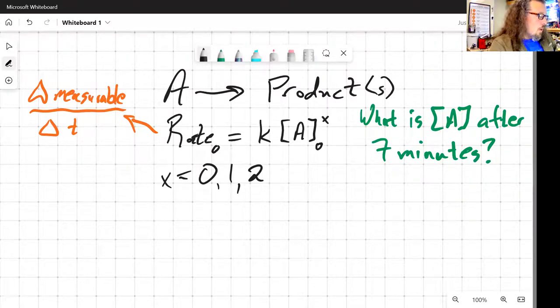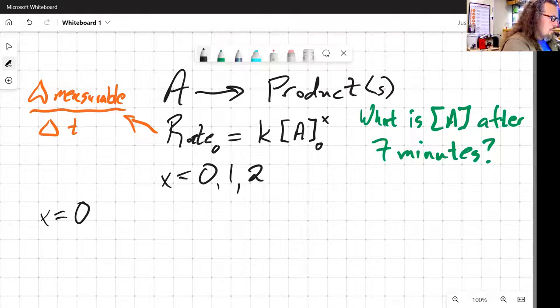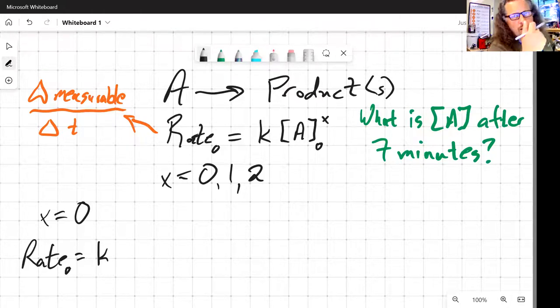So what if it's 0? If x is equal to 0, then let's rewrite that expression. Rate is equal to k times—well, if it's 0, that concentration term disappears, because anything raised to the 0 power is just equal to 1.